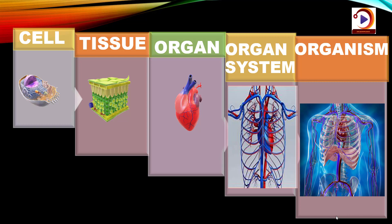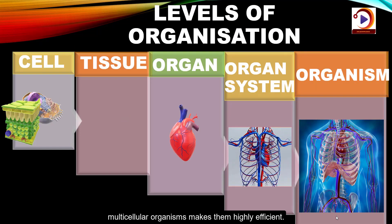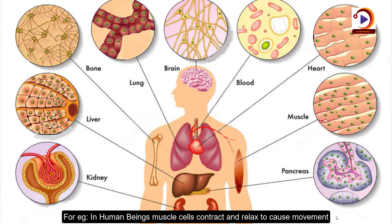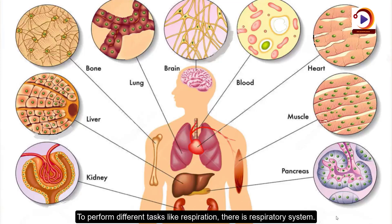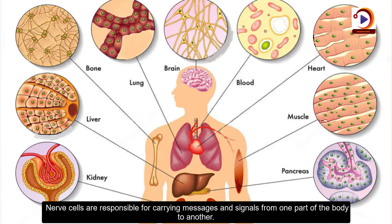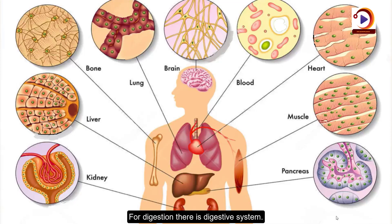Division of labour in multicellular organisms makes them highly efficient. For example, in human beings muscle cells contract and relax to cause movement and perform different tasks. There is also a respiratory system. Nerve cells are responsible for carrying messages and signals from one part of the body to another. For digestion, there is the digestive system.